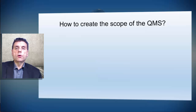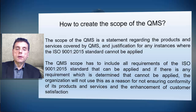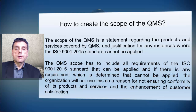How to create the scope of the Quality Management System? The scope is basically a statement regarding the products and services covered by the Quality Management System and justification for any instances where the ISO 9001:2015 standard cannot be applied. The scope must include all requirements of ISO 9001:2015 that can be applied, and if any requirement cannot be applied, the organization will not use this as a reason for not ensuring conformity of its products and services and the enhancement of customer satisfaction.